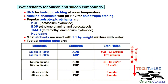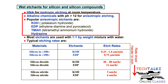For isotropic etching, the HNA solvent is used. HNA is a mixture of hydrofluoric acid, nitric acid, and acetic acid. For anisotropic etching, alkaline chemicals with pH greater than 12 are used — examples include KOH, EDP, and Tetra-methyl-ammonium hydroxide (TMAH).